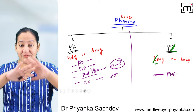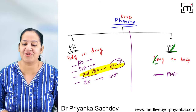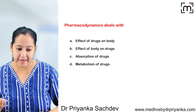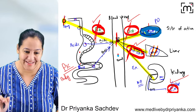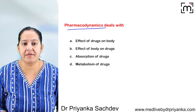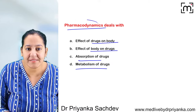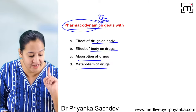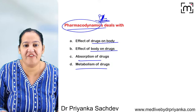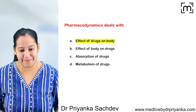Let's solve some questions on basic definitions. Pharmacodynamics deals with what? The options are: effect of drug on body, effect of body on the drug, absorption of drug, or metabolism of drug. Using the D for D mnemonic — pharmacodynamics is the effect of the drug on the body. The correct answer is A.